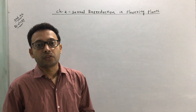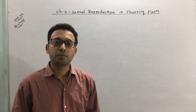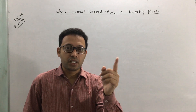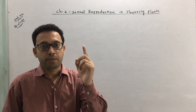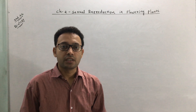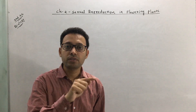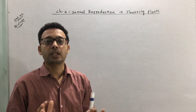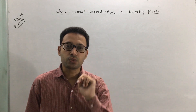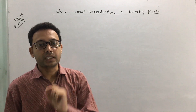Currently we are discussing post-fertilization events. There are four post-fertilization events: first, the zygote converts to an embryo; second, the primary endosperm nucleus converts to an endosperm; third, the ovule converts to a seed; and fourth, the ovary converts to a fruit. Of these four, we have already discussed how endosperm is formed from the primary endosperm nucleus and how the embryo is formed from the zygote.